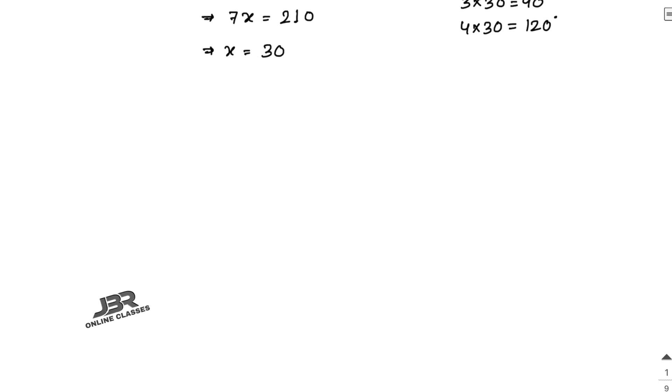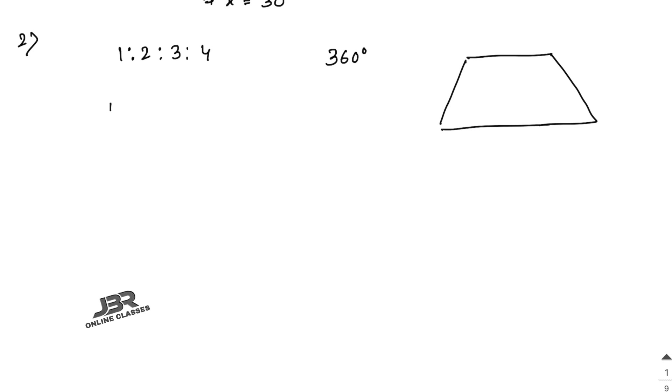Sum number 2: If the angles of a quadrilateral taken in order are in the ratio 1:2:3:4, find the angles. Since the sum of all angles equals 360°, the first angle = 360 × (1/10) = 36°, where 10 is the sum of ratio terms (1+2+3+4).